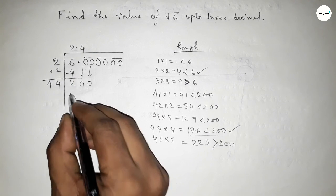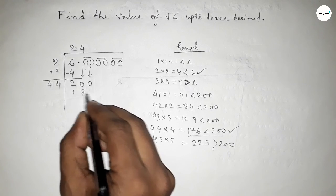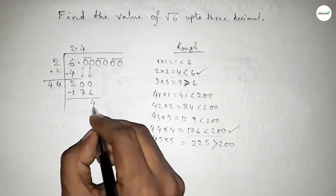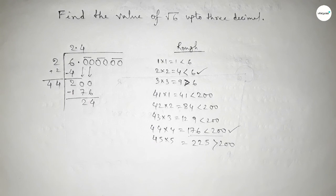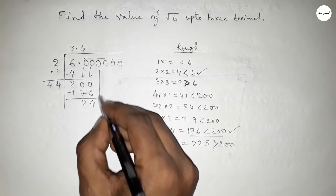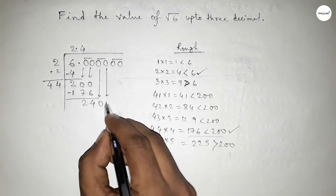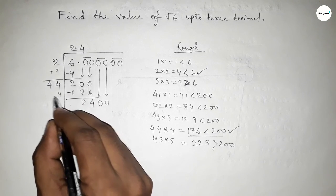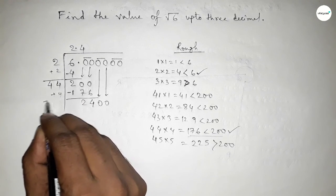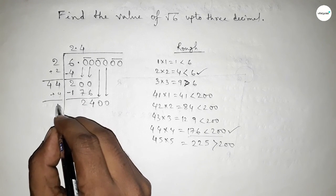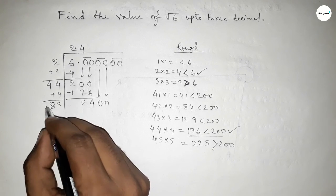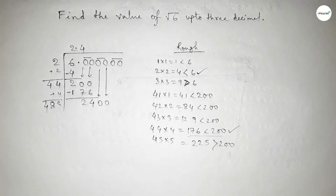Putting 176 and subtracting — this gives 24. Now putting the pair of zeros here. Similarly, adding the last digit: the last digit is 4, so this becomes 48.